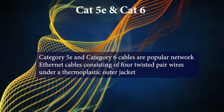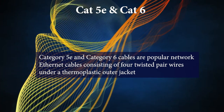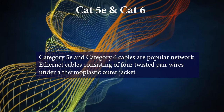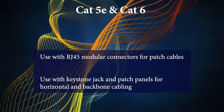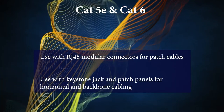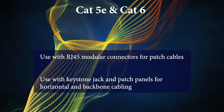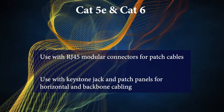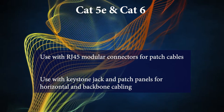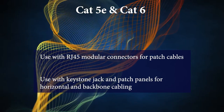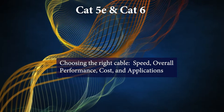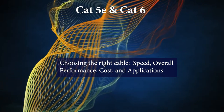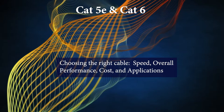Category 5E and Category 6 cables are popular network Ethernet cables that consist of four twisted pair wires under a thermoplastic outer jacket. Cat 5E and Cat 6 cables are used with RJ45 modular connectors for patch cables, and horizontal and backbone cabling is typically terminated onto modular keystone jacks and patch panels. Choosing the right category rated Ethernet cable for your network depends on several factors such as speed and overall performance, cost, and applications.